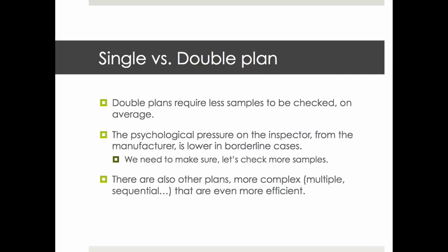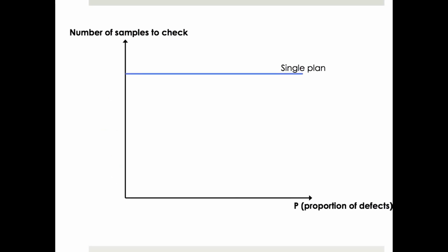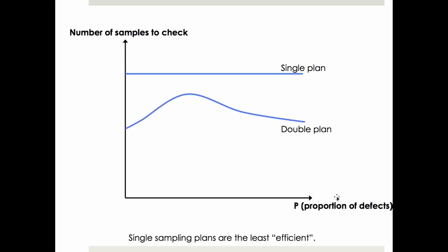With double sampling plans, when it's borderline, very often there's a second step — checking more samples — which removes some of that psychological pressure. To show how it's more efficient: in a single sampling plan, it's always the same number of samples checked regardless of defect proportion. In a double plan, the average sample size goes up when defect rates are close to the AQL, but most of the time it's below the single plan, meaning fewer samples to check overall.